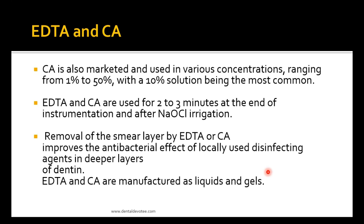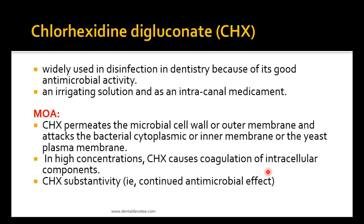EDTA and citric acid (CA) are also marketed and used in various concentrations ranging from 1 to 50%, with a 10% solution being the most common. They are used for 2 to 3 minutes at the end of instrumentation after sodium hypochlorite irrigation — sodium hypochlorite first removes the organic debris, and then for inorganic debris EDTA and citric acid are used. Removal of the smear layer by EDTA or CA improves the antibacterial effect of locally used disinfecting agents in deeper layers of dentin. They are manufactured as liquids and gels.